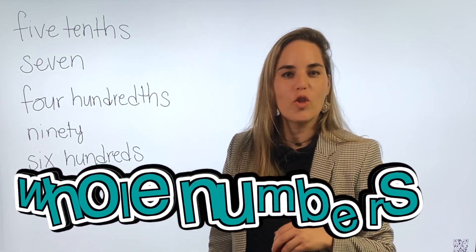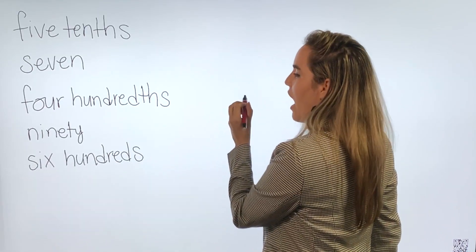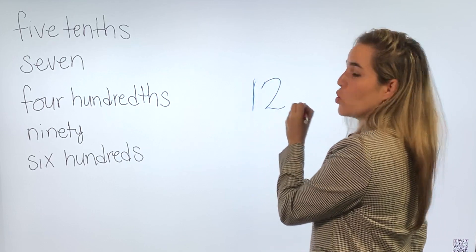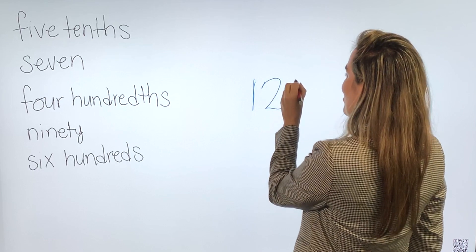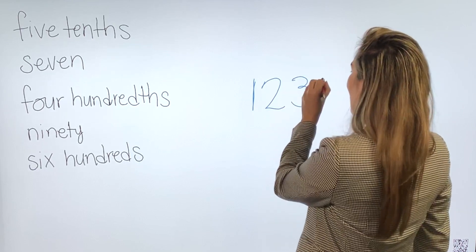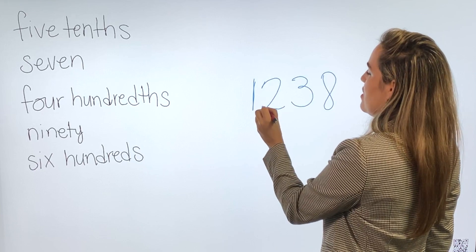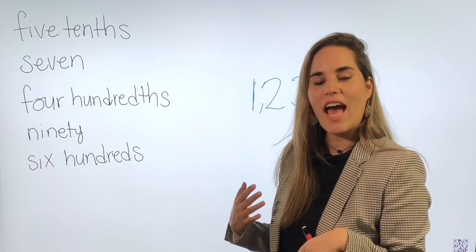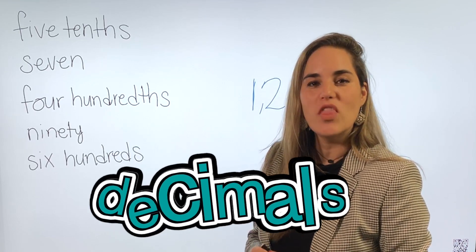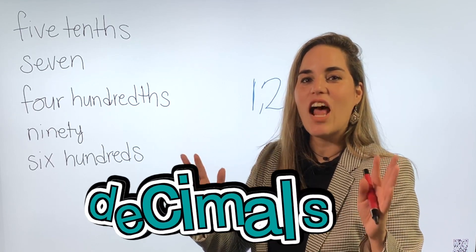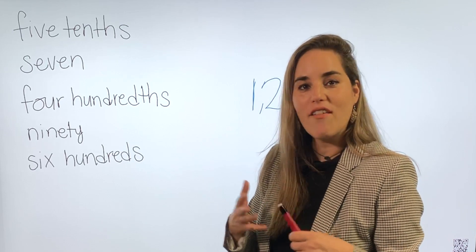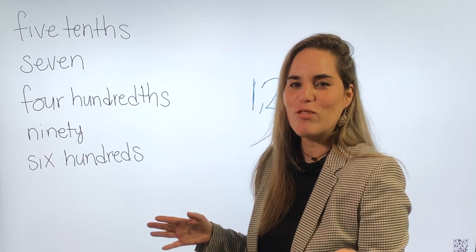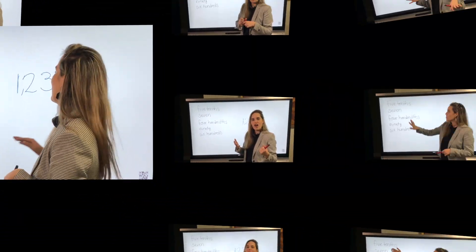First of all let's start with whole numbers. Whole numbers are made out of digits like one, this is the number one, this is the number twelve, hopefully you know these numbers. 123, 1,238. All of those are whole numbers but here we're gonna add decimals. Decimals mean that it's a part of a whole number. You don't have enough to make a whole number. I know it can be kind of confusing but the more you do it the easier it gets.